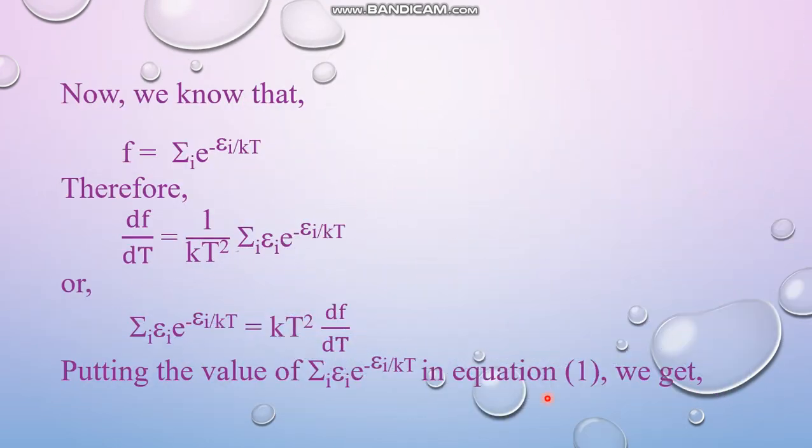But we know that F has its own expression F equals to sum over i e to the power minus epsilon_i by kT. So if this F or the partition function is differentiated with respect to temperature, then it would result in 1 by kT squared sum over i epsilon_i e to the power minus epsilon_i by kT.